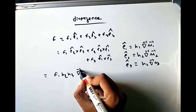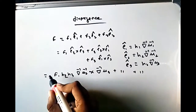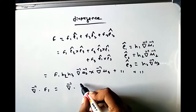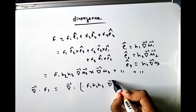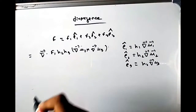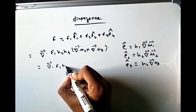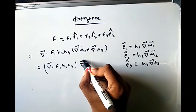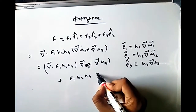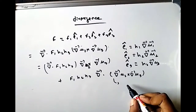We want to cancel terms algebraically. Substituting these expressions, F = F₁h₂h₃ (∇u₂ × ∇u₃) + F₂h₃h₁ (∇u₃ × ∇u₁) + F₃h₁h₂ (∇u₁ × ∇u₂). Taking the divergence of F, we consider the first term: div(F₁h₂h₃ ∇u₂ × ∇u₃).